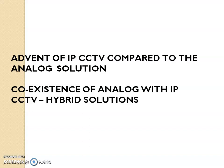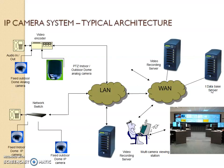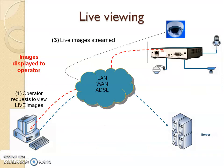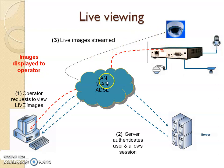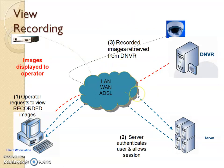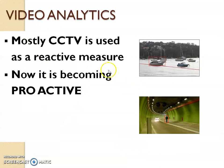The advent of IP CCTV compared to the analog solution, and the coexistence of analog with IP CCTV — hybrid solutions. A CCTV system is connected to a LAN or WAN, where viewing can happen remotely. The system can also be recorded continuously — this is called view recording — and now we move on to video analytics. Mostly CCTV is a reactive mission, but now it is becoming a proactive mission, meaning intelligence is happening in CCTV.